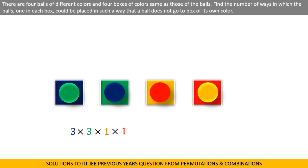So the total number of ways of placing four balls is equal to 3 times 3 times 1 times 1, which is equal to 9.